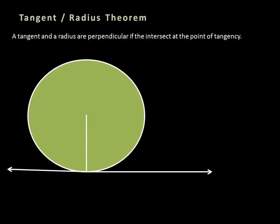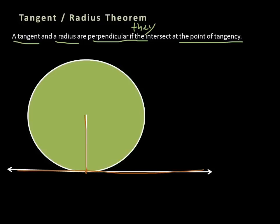The next concept is the tangent-radius theorem. If we have a tangent and a radius, they are always perpendicular at the point of tangency. Remember the point of tangency is where the line touches the circle. The radius drawn to that point does in fact intersect the tangent line there, so these two are perpendicular.